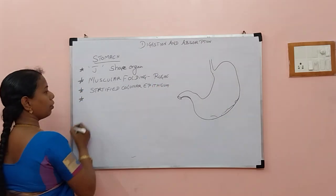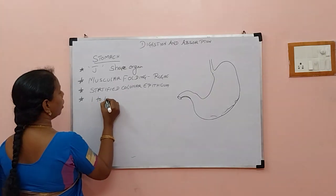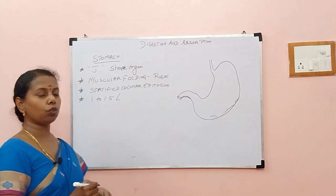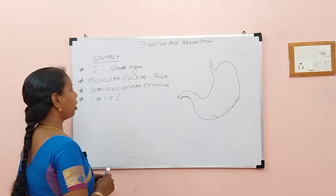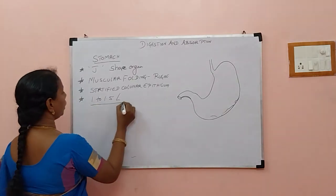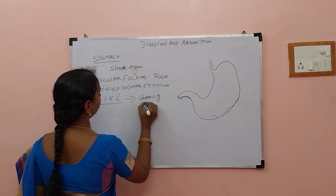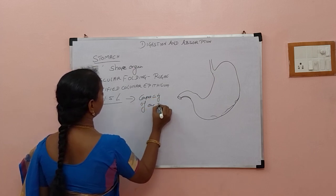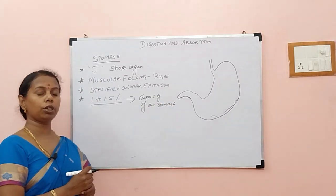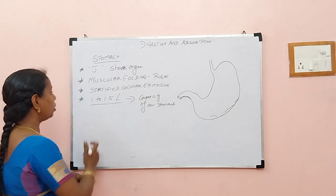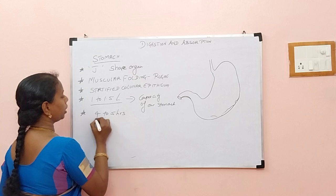What is the capacity of our stomach? It is 1 to 1.5 litres at maximum. Somebody can even store up to 4.5 litres because the stomach is elastic in nature. So 1 to 1.5 litres is the normal capacity of our stomach. How long is the food stored in the stomach? The food is stored around 4 to 5 hours.